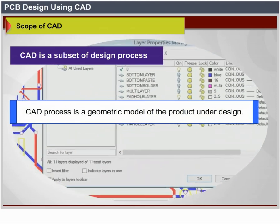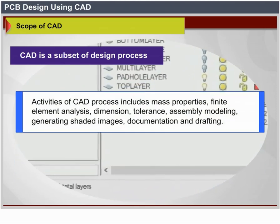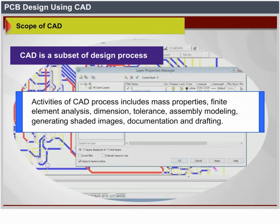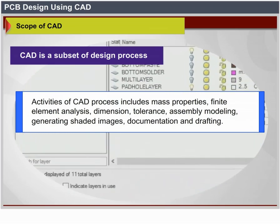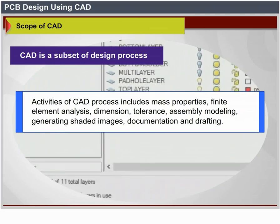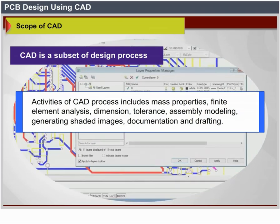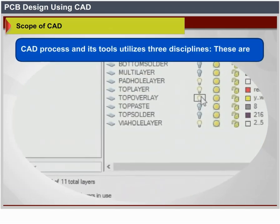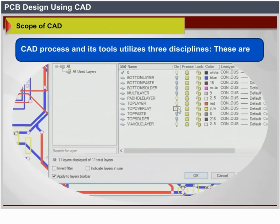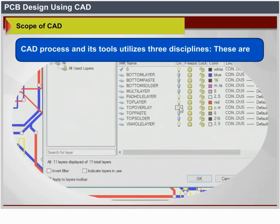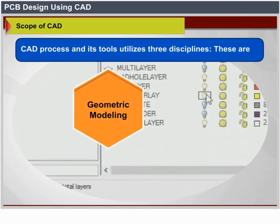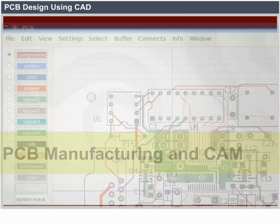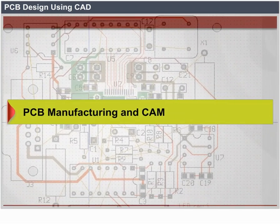Activities of the CAD process include: mass properties, finite element analysis, dimension, tolerance, assembly modeling, generating shaded images, documentation and drafting. The CAD process and its tools utilize three disciplines: geometric modeling, computer graphics, design, PCB manufacturing, and CAM.